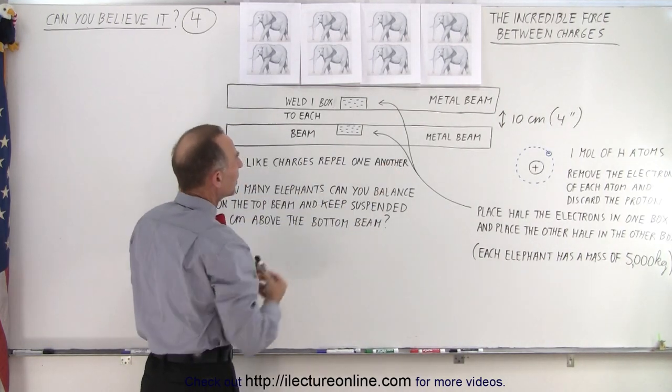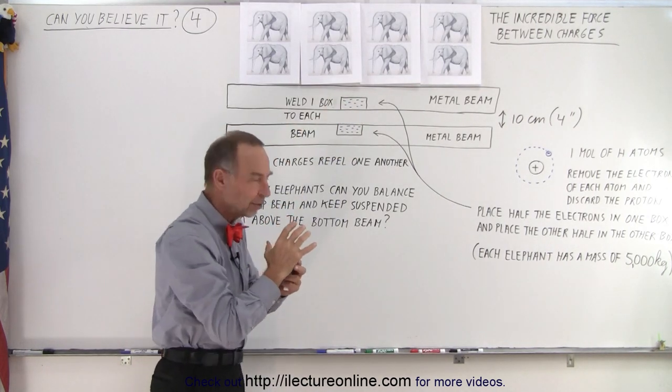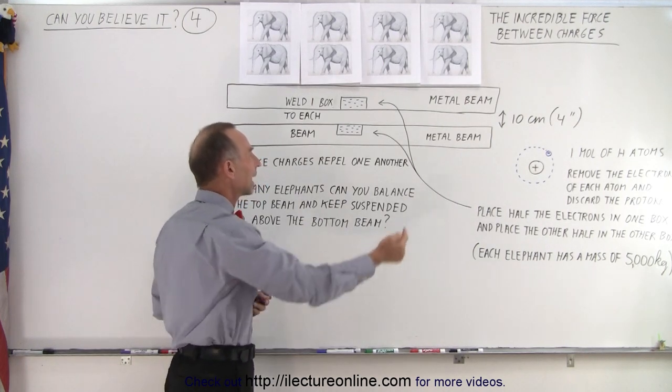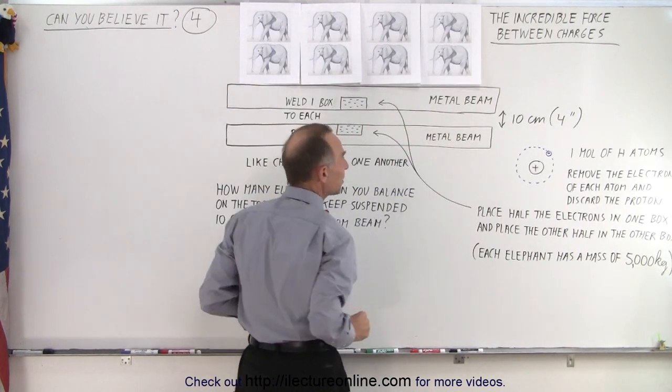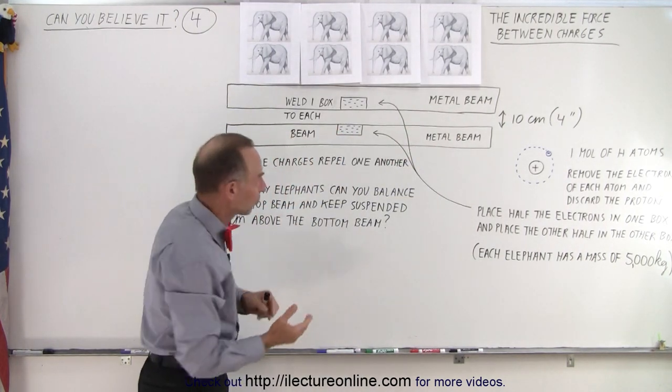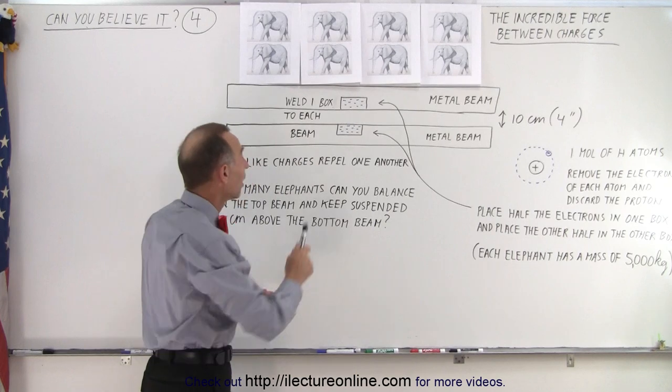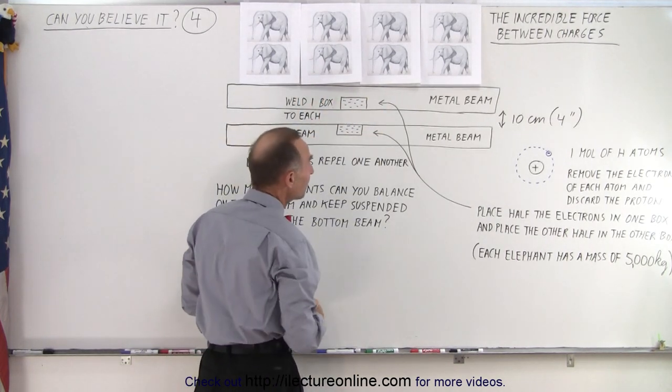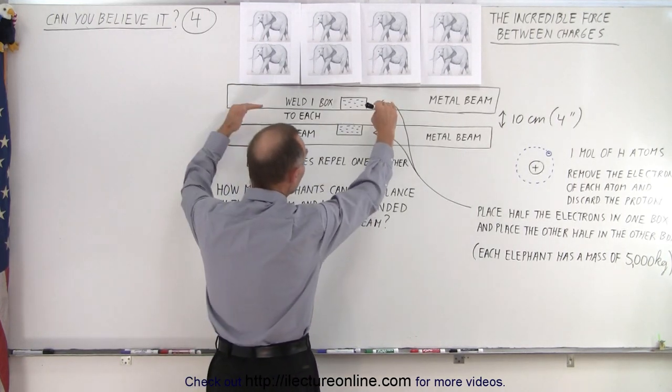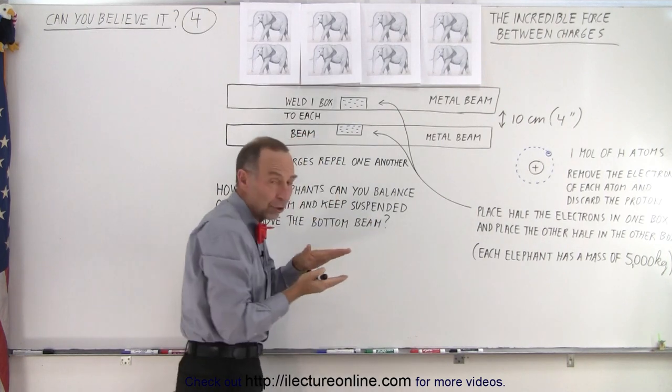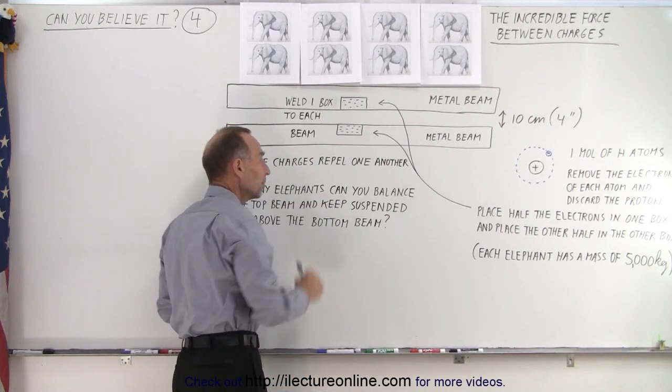Let's say we have two metal beams, and we attach a box to each of the two beams. We'll weld the box on there very strongly in such a way that we can then put electrons into each box, and we're going to try and keep the two beams 10 centimeters apart. In other words, the repulsive forces should levitate this beam over this beam.